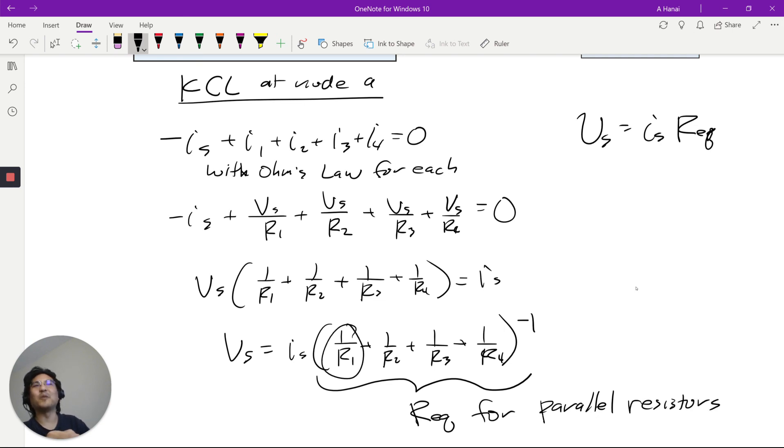So 1 over R1 plus 1 over R2 plus 1 over R3. And then take the reciprocal. Okay, let's do some examples on the next video. I'll see you next time.